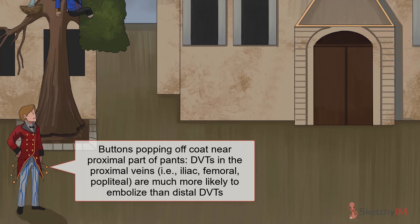Most PEs arise from deep vein thromboses in the proximal lower extremity veins — the iliac, femoral, and popliteal veins, to be precise. Compared to distal veins, such as those in the calf, proximal DVTs are much more likely to embolize and cause PEs. Hence the buttons popping off this revolutionary's coat near the proximal part of his pants.